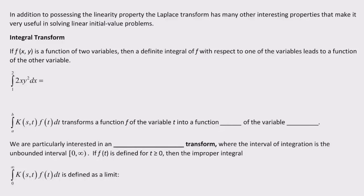For example, if f of x y is a function of two variables, then the definite integral of f with respect to one of the variables leads to a function of the other variable. So let's take the definite integral of 2xy squared dx, and I'm going to integrate with respect to x, which means I'm going to hold y constant. That's going to give me the 2 out front times one half x squared, and we keep the y squared where it is.